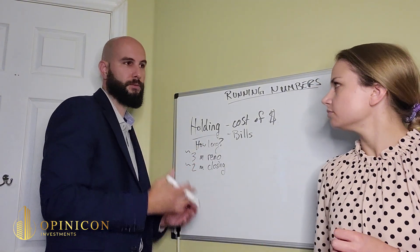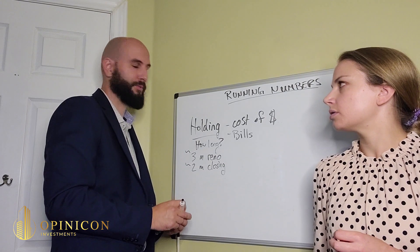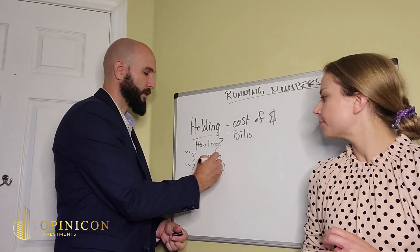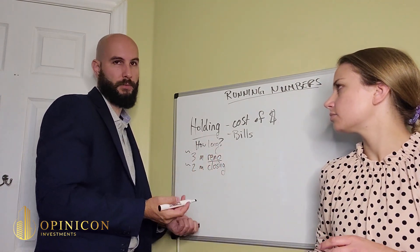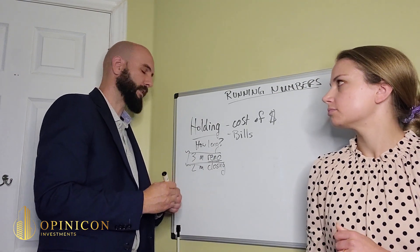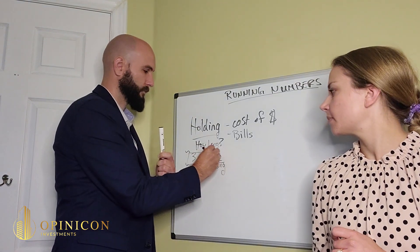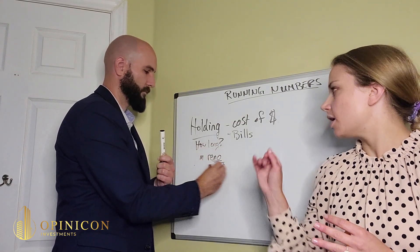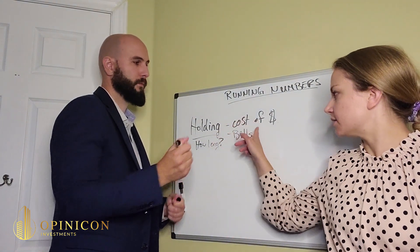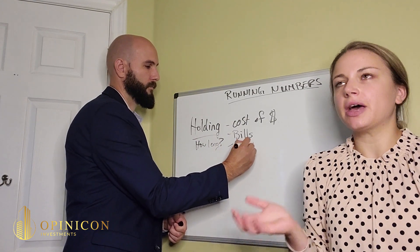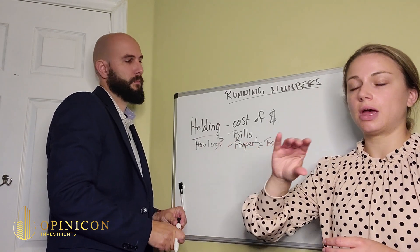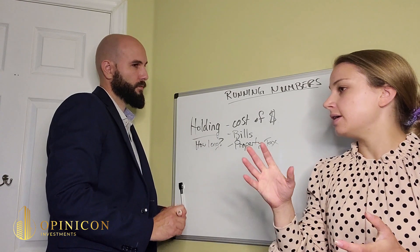Closing periods are typically 30 to 90 days. We run numbers at six months for the entire project — renovation plus closing. For a quick lipstick renovation it might only take two months, but your contractor will tell you how long it takes and that should be in a contract. Holding costs is anything that comes up while holding the property — most commonly the bills to keep the house running and your cost of money. It does not include renovations — that's a separate number.